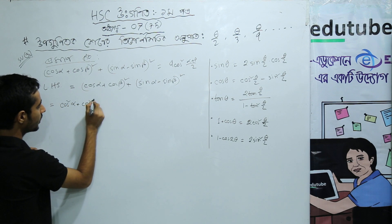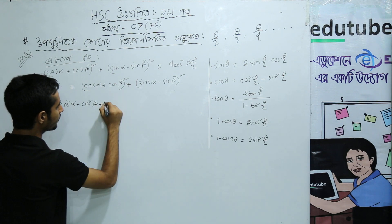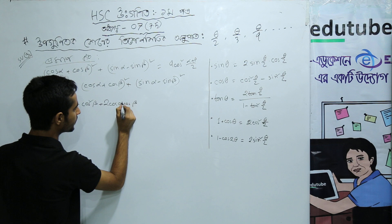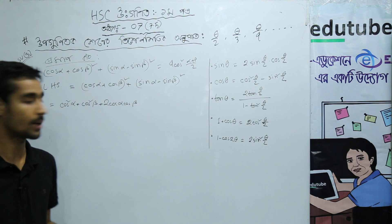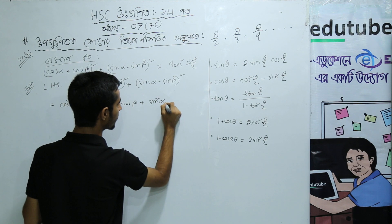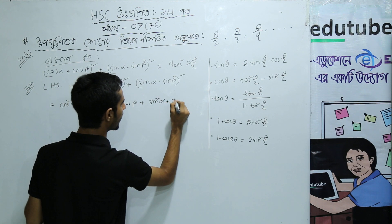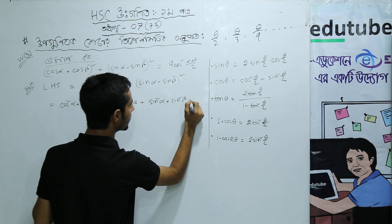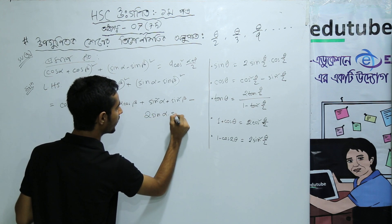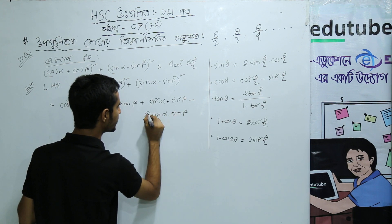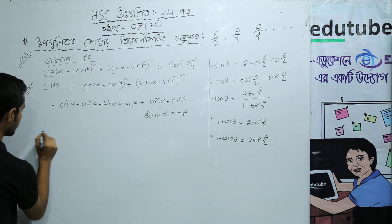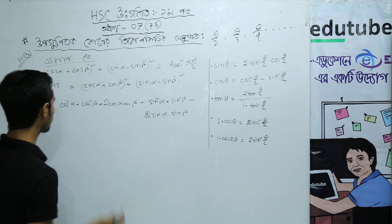So we expand: cos squared alpha plus cos squared beta plus 2 cos alpha cos beta — using the (a+b) whole square formula — plus sin squared alpha plus sin squared beta minus 2 sin alpha sin beta — using the (a−b) whole square formula.